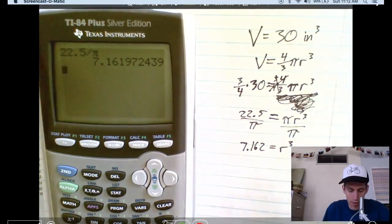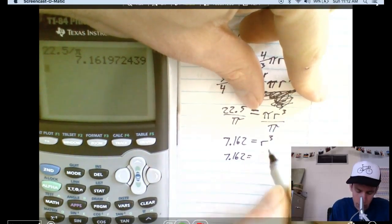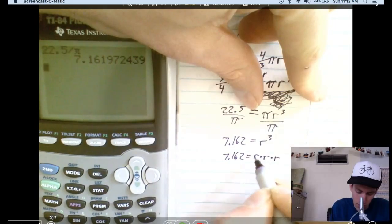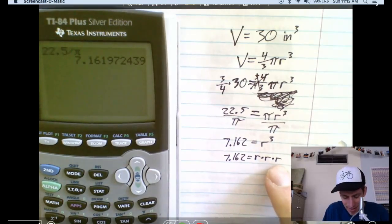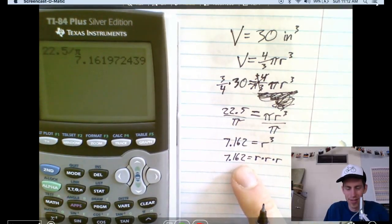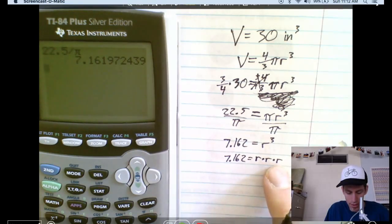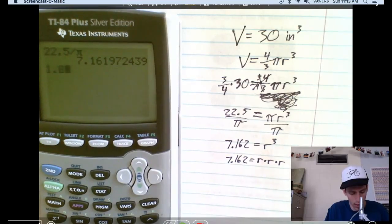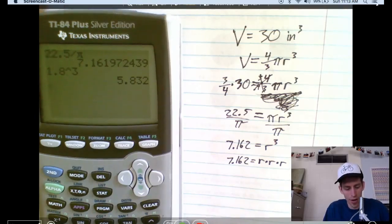equals r cubed. Now, this is saying that, if you look right here, seven point one six two equals r times r times r. What would r be? What times itself times itself again is seven point one six two? That's, that's tough to figure out. Well, you could do trial and error. What about two? Two times two times two is eight. Two times two is four times two is eight. So that, it's got to be a little less than two. Right? What about one point eight? One point eight to the power of three is five point two. It's more than one point eight. Well, guess what?